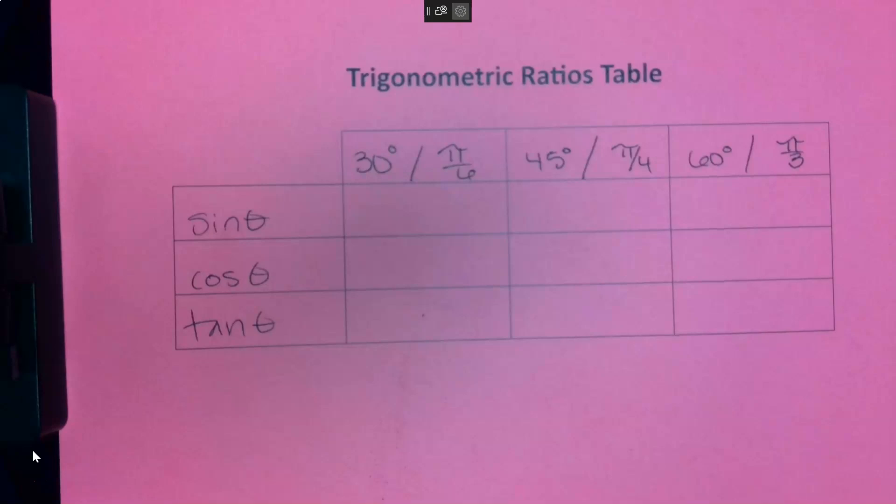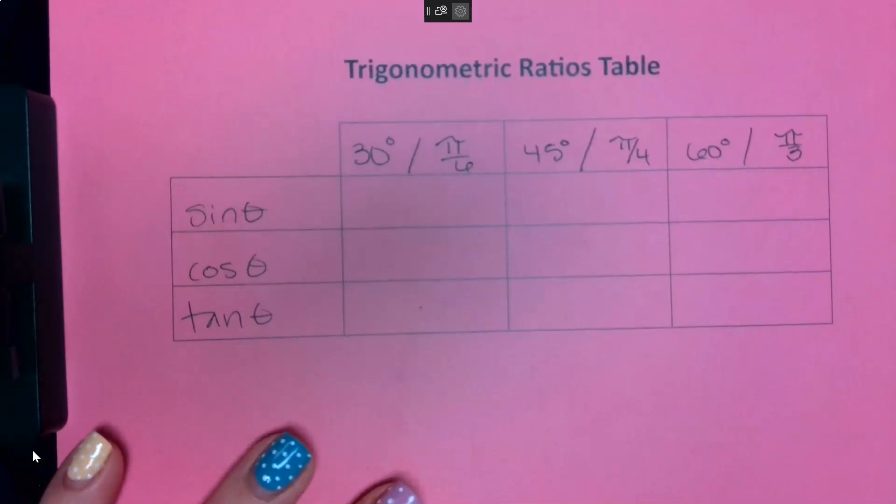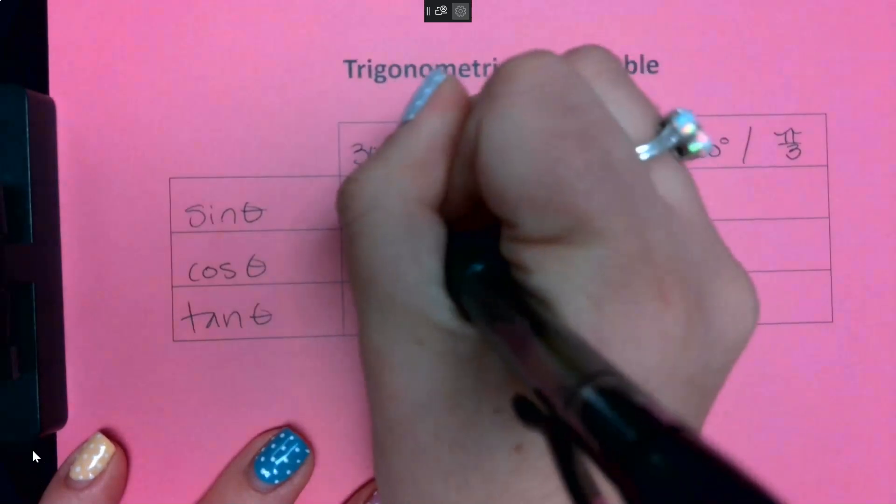So as long as you remember the degrees, you can always use the conversion to turn it back into radians. The way this table works is sine and cosine, all of my numbers are over two.